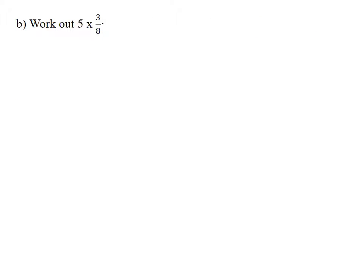Here's the next one. Work out 5 times 3 eighths, same procedure. 5 times 3 eighths is the same as 5 times 3, which is 15 over 8. 8 goes into 15 once and there is 7 left over, so the answer is 1 and 7 eighths.